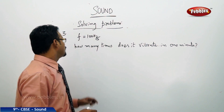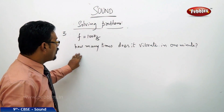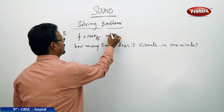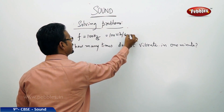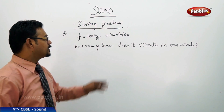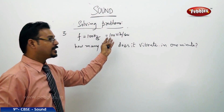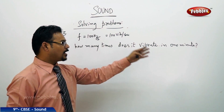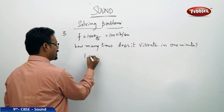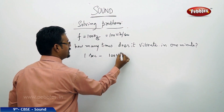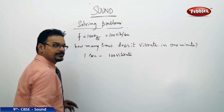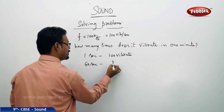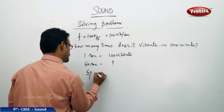Problem 3: A source has a frequency of 100 Hz. How many times does it vibrate in one minute? 100 Hz means 100 vibrations per second. In one second it vibrates 100 times. One minute equals 60 seconds, so in one minute it vibrates 60 × 100 = 6,000 vibrations.